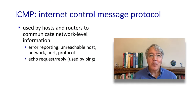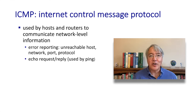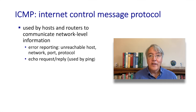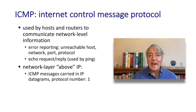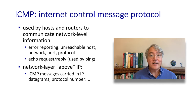The ICMP protocol is used by hosts and routers to communicate network-level information to each other. Often this information is in the form of error reporting — for example, a network, host, port, or protocol that's unreachable. ICMP messages are also used in ping and traceroute. ICMP messages are carried directly as payload inside an IP datagram, just like UDP and TCP segments, so we can think of ICMP as a sibling protocol to UDP or TCP, though not really a transport layer protocol.